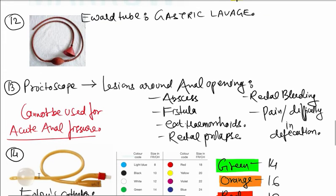Next one is the Ewald tube. This is used in gastric lavage.